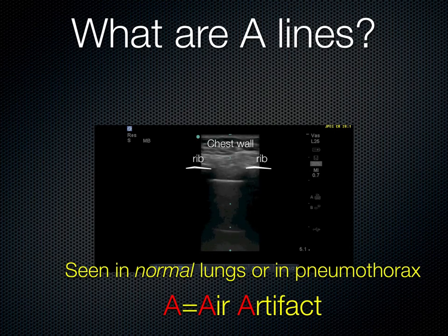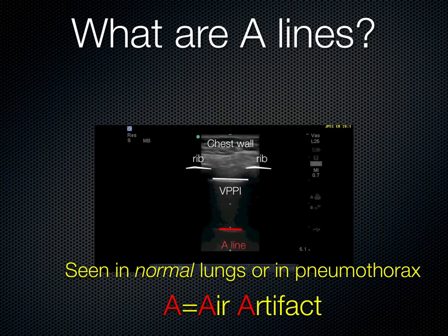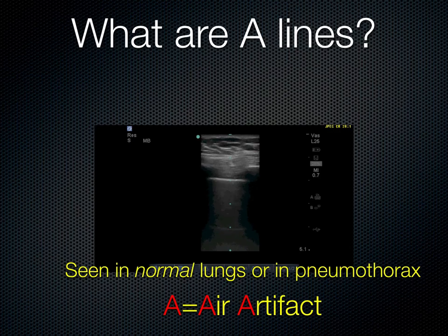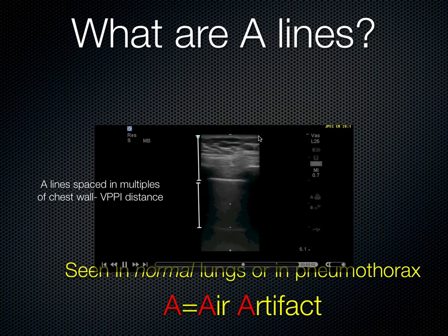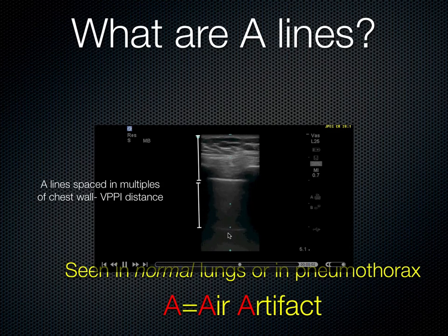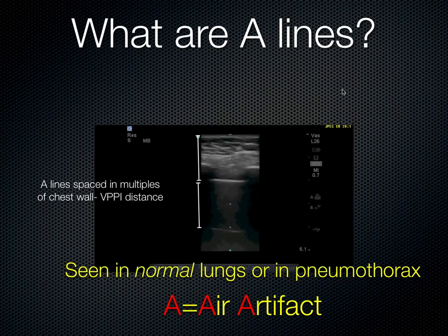Here we have the chest wall, the ribs and rib shadows, and the VPPI — the visceral-parietal-pleural interface. You'll notice an A line right here. That is not an actual structure — it is a reflection of the pleural line, and it should almost always be equidistant from the skin where the probe is sitting. The distance between the skin and the pleural line is reflected again from the pleural line down — the same distance — because these ultrasound beams that scatter back up to the probe are read by the probe as something deeper.